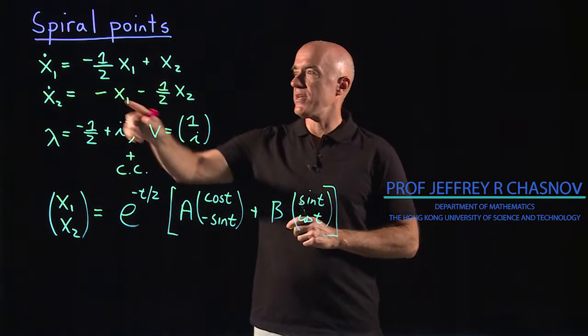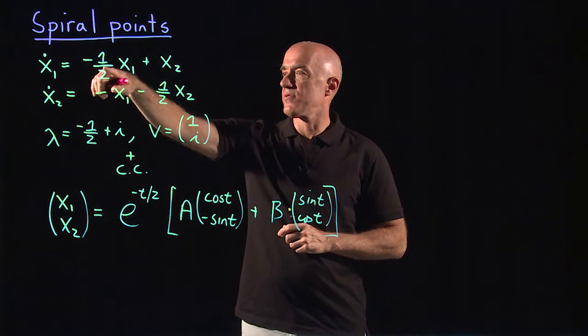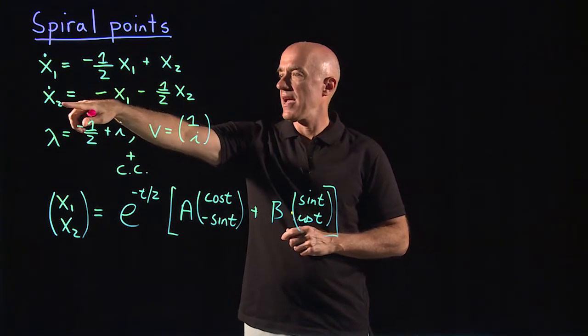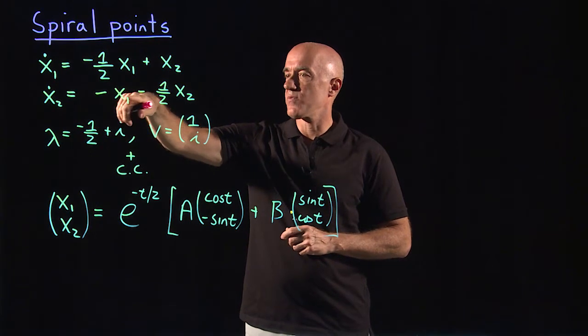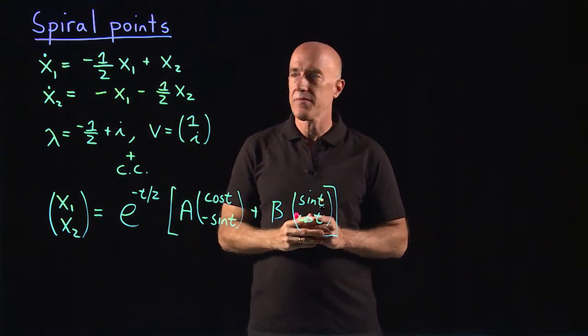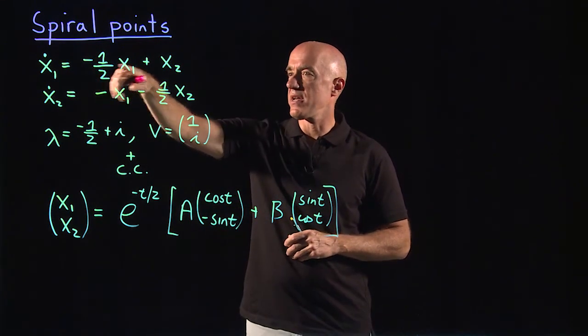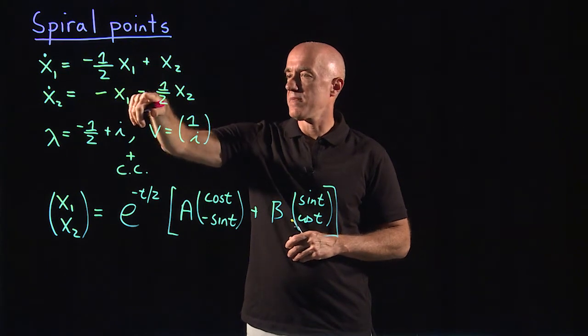Here the differential equation is x1 dot equals minus 1 half x1 plus x2. x2 dot equals minus x1 minus 1 half x2. The matrix is minus 1 half 1 minus 1 minus 1 half.